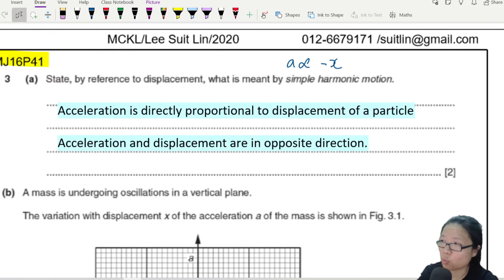So here are the two points. One, acceleration is directly proportional to displacement of a particle. Two, they are in opposite direction. If you mention them, you will get one mark. Alright, moving on.